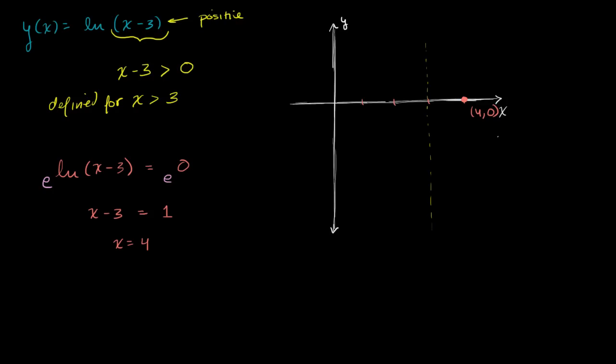But let's think about what happens as we approach x equals 3 from the right hand side. Let me make a little table here and put some x values here, and then let's think about what our corresponding y value is. So we already know that we get 4, 0. Let's try out 3.1, 3.01, and 3.001 and see what you get.